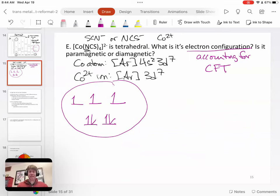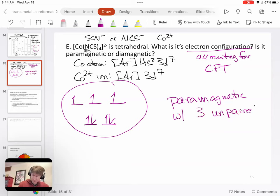Is it paramagnetic or diamagnetic? Well, at least one unpaired electron means it's paramagnetic. And actually, sometimes we'll ask you paramagnetic with how many unpaired electrons? With three unpaired electrons. And our story is building. We're getting there. We can now answer this question based on the information that we've been given.